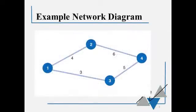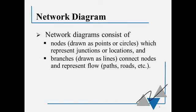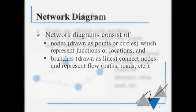This is an example of a very simple network diagram. Network diagrams consist of nodes, which are drawn as points or circles, and these represent locations or maybe even just junctions between paths. And the branches, which are drawn as lines, which connect the nodes, and those represent flow, so they can be a path or a road, a wire, a pipe, all kinds of things that will help move things along.